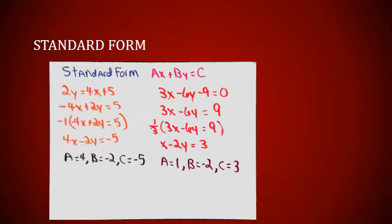Let's look at a couple of simpler examples of converting an equation into standard form. First, we've got 2Y equals 4X plus 5. To put that in standard form, I'm going to move the X over across the equal sign, changing 4X to minus 4X. So now I've got minus 4X plus 2Y equals 5. I've met the rule that all values are integers — 4, 2, and 5 are all integers.